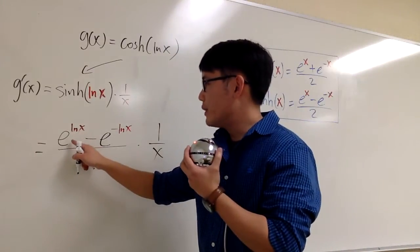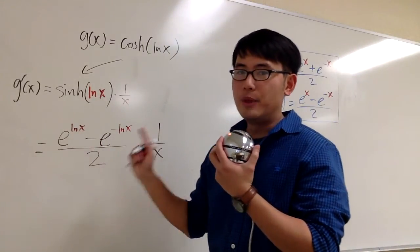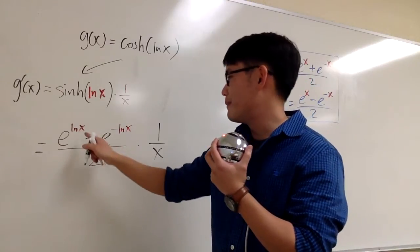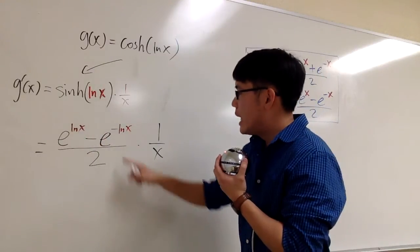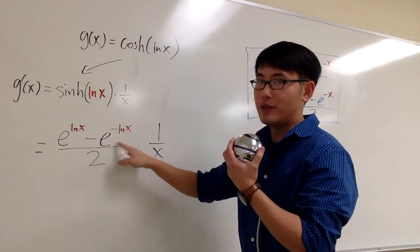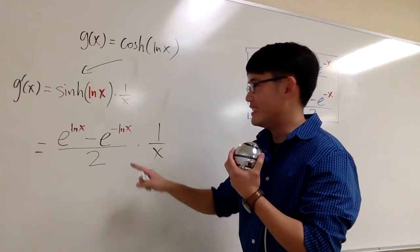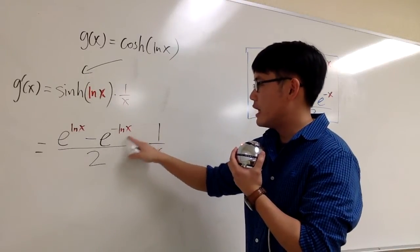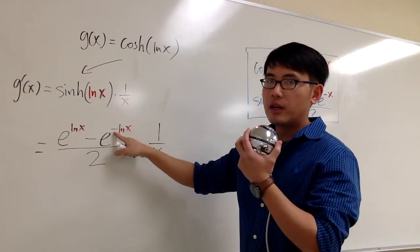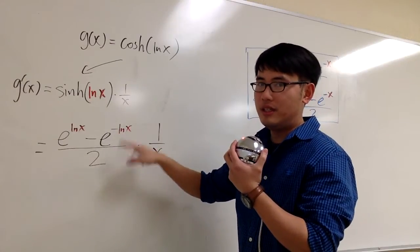Well, what's this? What's e to the ln x? This is very nice. This is just x. But you can't just cancel this out at the moment. What you have to do is this. Negative ln x. We have to clear the coefficients first before we can cancel the e and the ln.